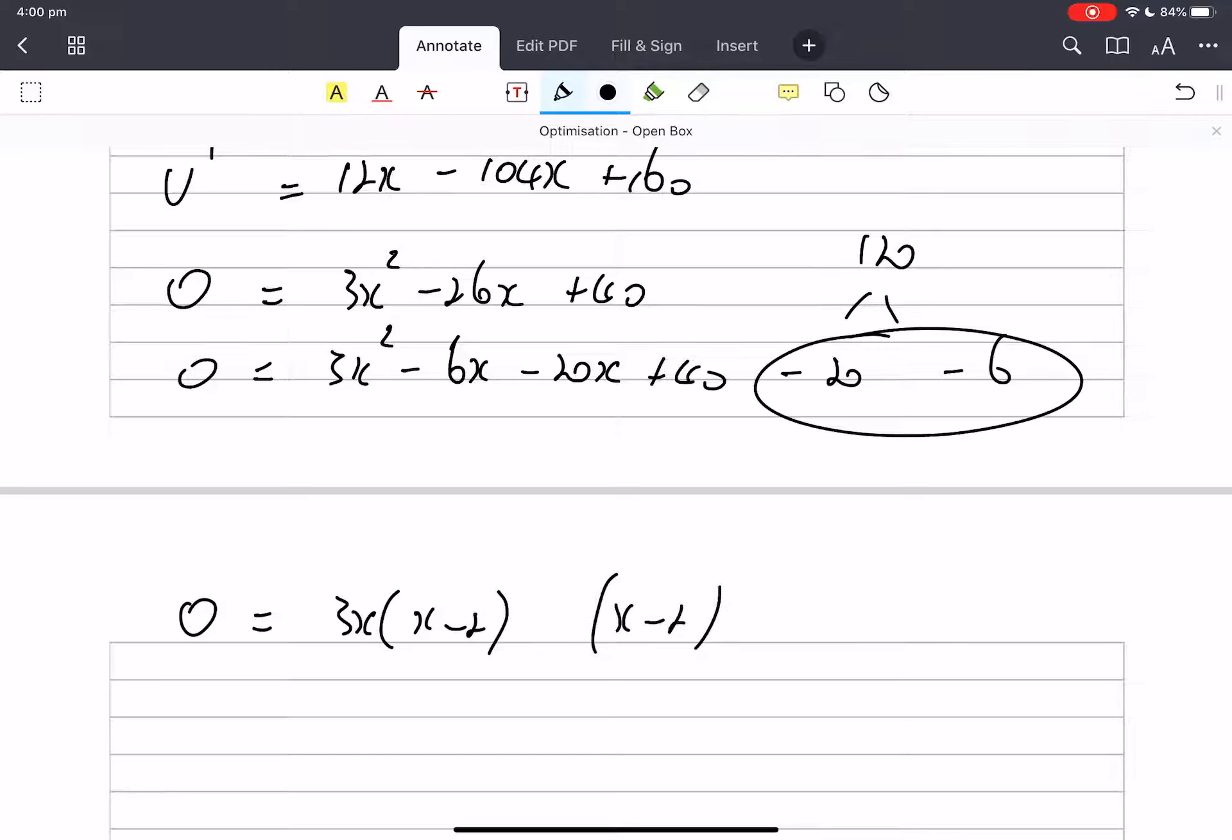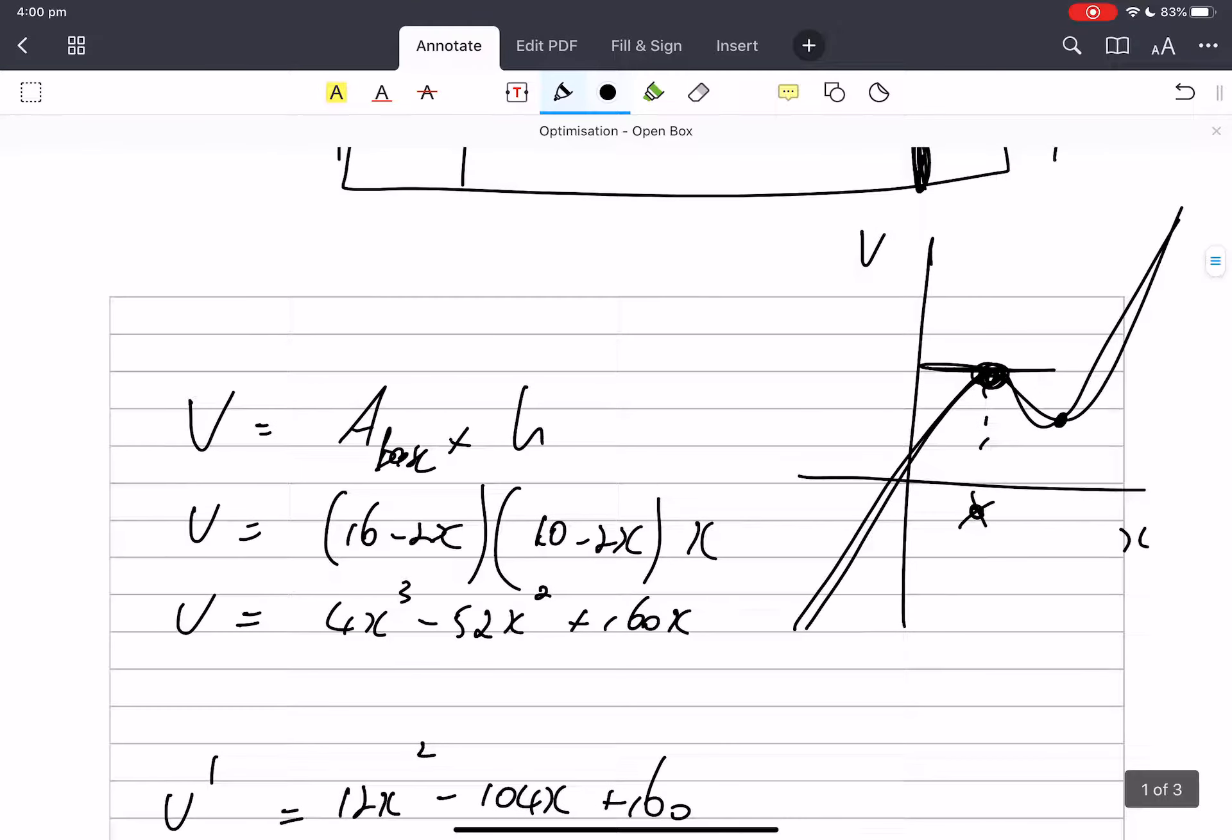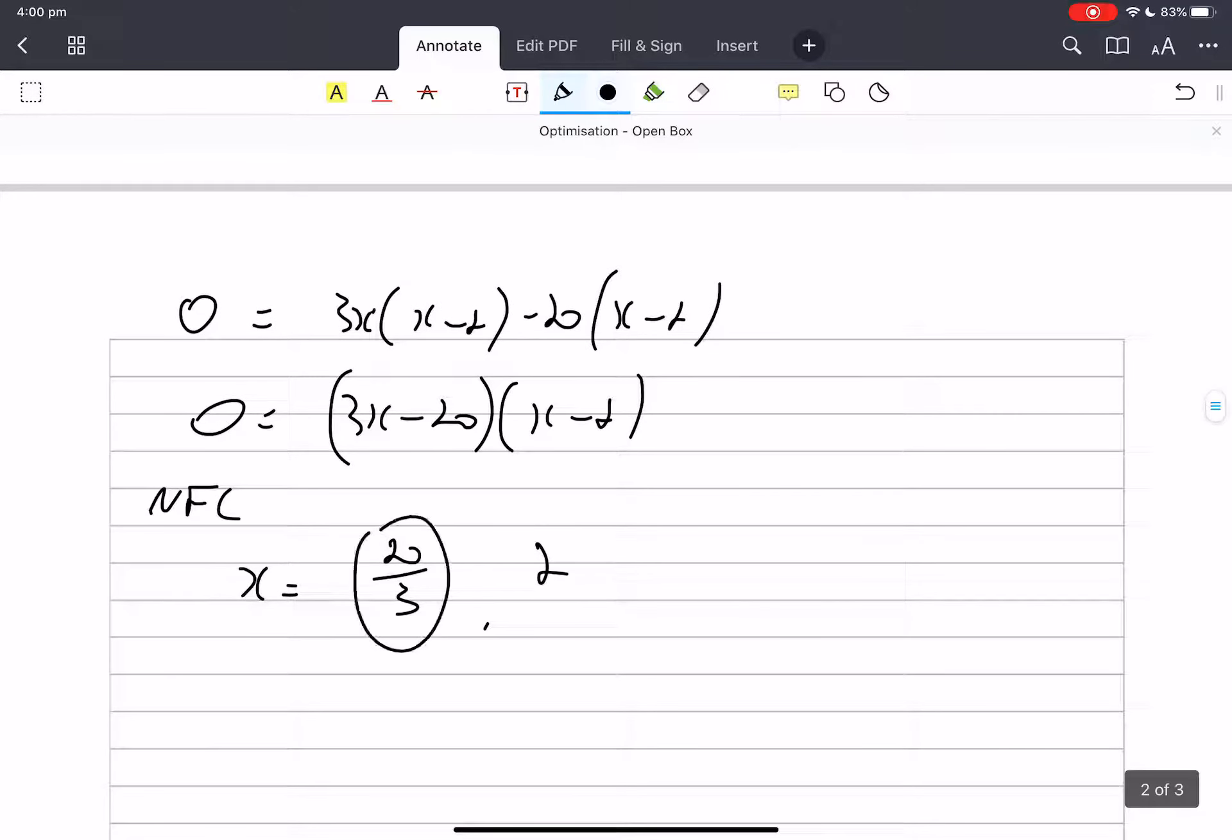And what comes out of that? That will be 8. We were expecting two answers because remember we're going to get two flat spots on a cubic, so we needed two answers.